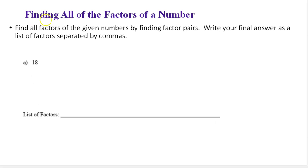In this video we're going to learn how to find all of the factors of a number. Find all the factors of the given numbers by finding factor pairs. Write your final answer as a list of factors separated by commas. So a factor of a number is a number that when we divide the number by that number the remainder is zero.